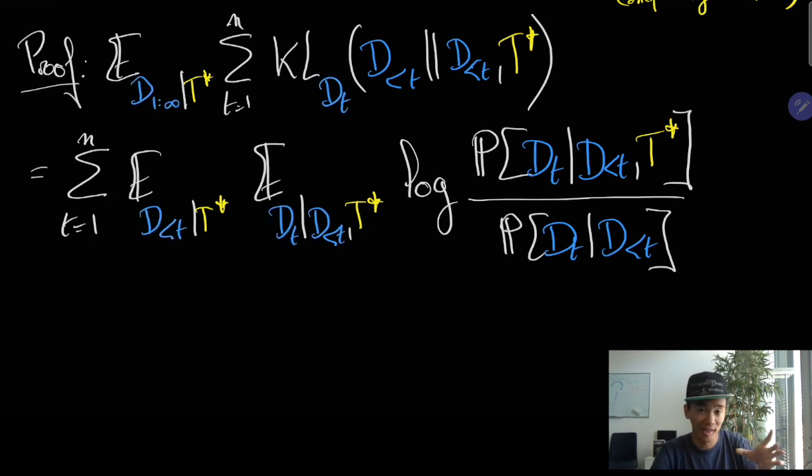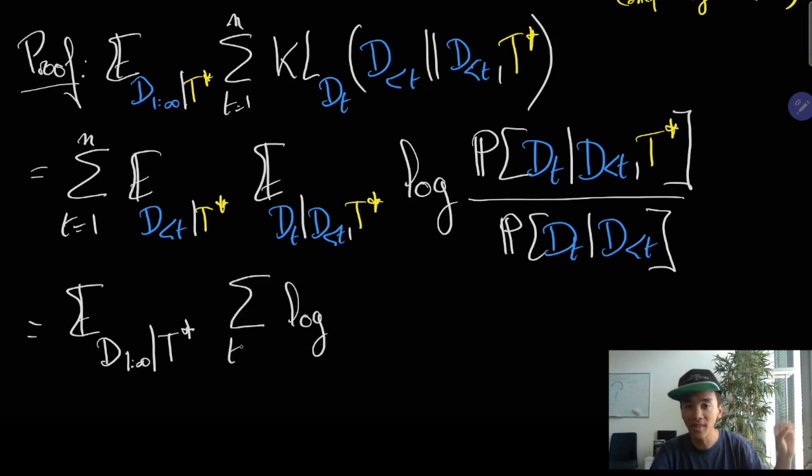The interesting thing is because of linearity of the expectation operators we can take the expectation over all the inputs X1 to N, including future data, and then we can invert the sum and the expectation.